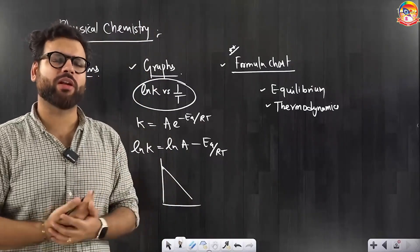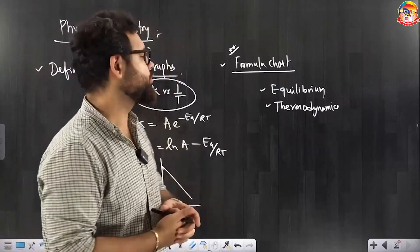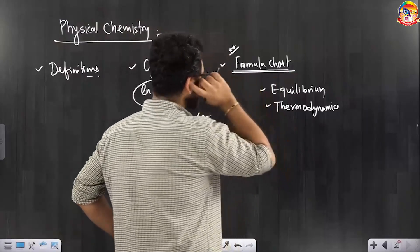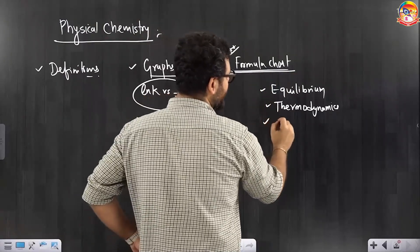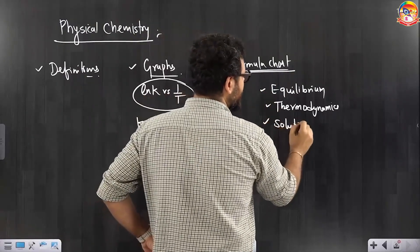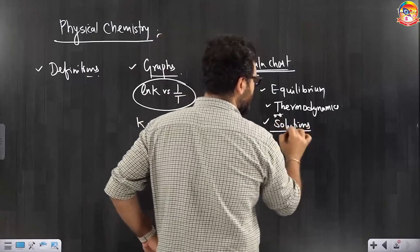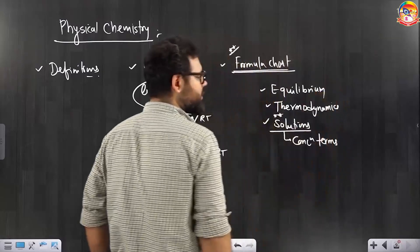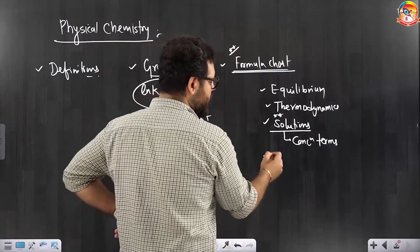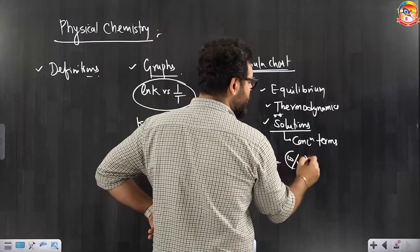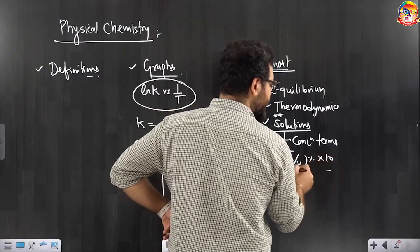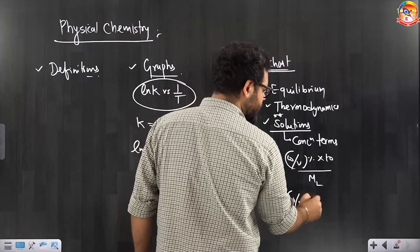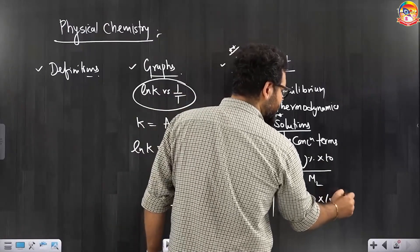Make sure that you practice all the formulas at one place. The formula chart of the solutions chapter is very important — every year questions are coming from the concentration terms and interconversion formulas. That formula chart is very important. Like how to convert molarity using weight percent into 10 × density divided by molar mass. How to convert molarity to molality: molality = 1000 × molarity divided by (density minus molarity into molar mass). So many formulas are there like this.